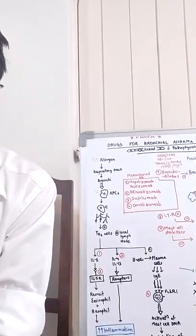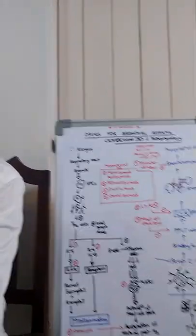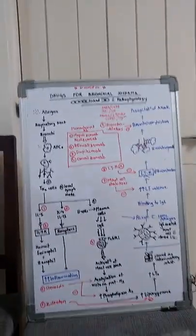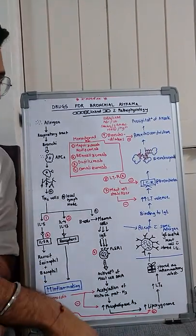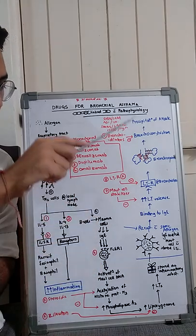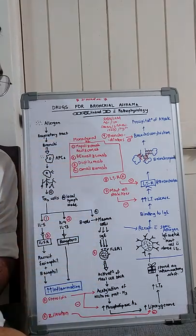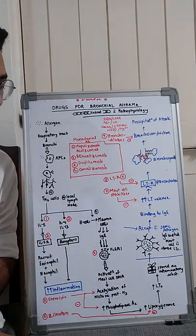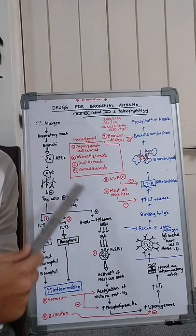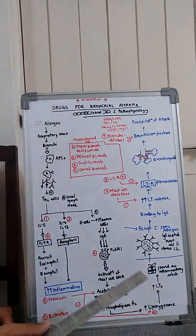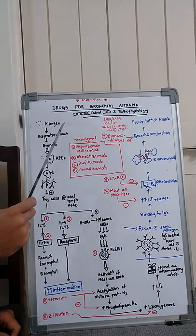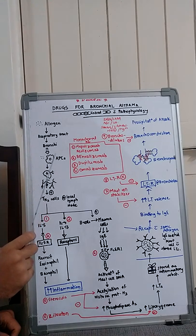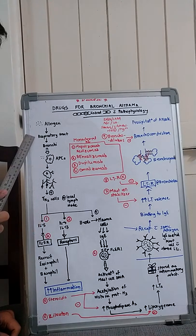Let's start the video. This is a pathophysiology flowchart format. First, we will discuss the pathophysiology, and then we are going to discuss the drugs acting at individual steps. First of all, there is allergen exposure — the allergen enters the respiratory tract by inhalation and reaches the bronchi.